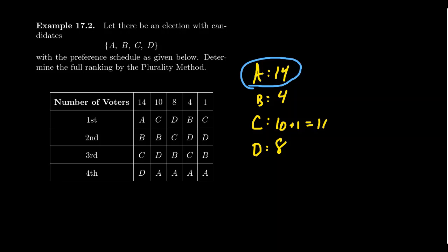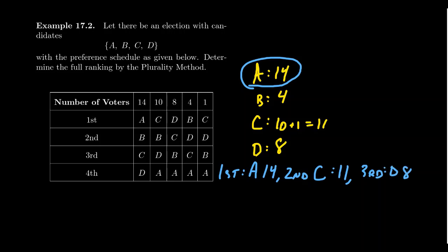The winner of the election is candidate A, who received the most number of first place votes. We can also do a complete ranking: first place goes to candidate A with 14 votes, second place to candidate C with 11, third place to candidate D with 8, and fourth place goes to candidate B with 4 first place votes. So that would be the outcome of this election.